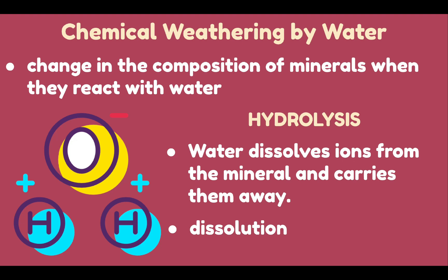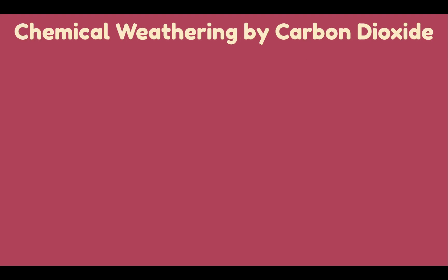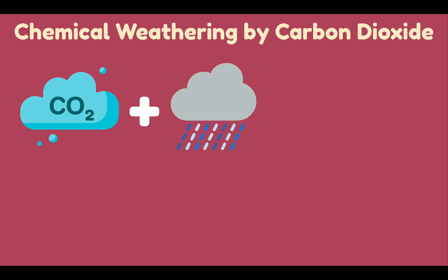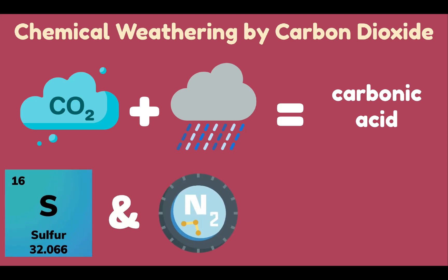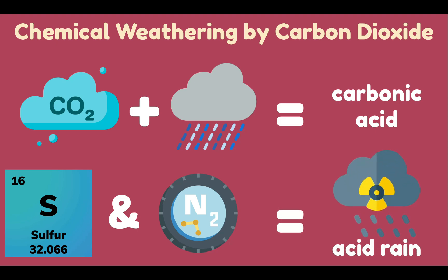Carbon dioxide (CO2) combines with water as raindrops fall through the atmosphere, making a weak acid called carbonic acid. Carbonic acid is very common in nature, where it works to dissolve rock. Sulfuric pollutants such as sulfur and nitrogen from fossil fuel burning create sulfuric acid and nitric acid. Sulfuric and nitric acids are the two main components of acid rain, which accelerate chemical weathering.